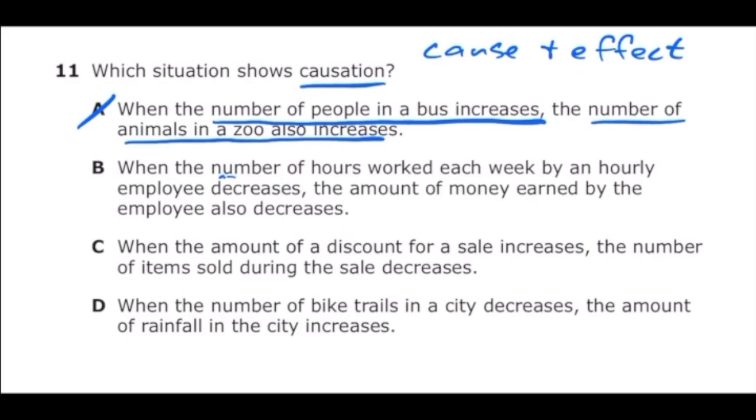Letter B says, when the number of hours worked each week by an hourly employee decreases, the amount of money earned by the employee also decreases. Now this one makes a lot more sense. If you work less hours and you're getting paid hourly, then you're going to make less money. So this one is correct. Our answer is letter B.